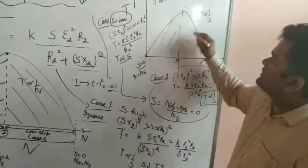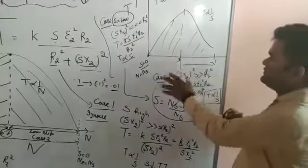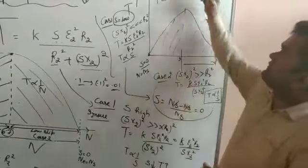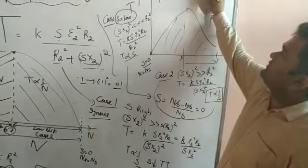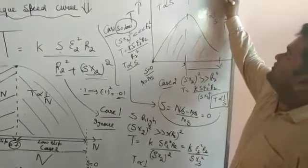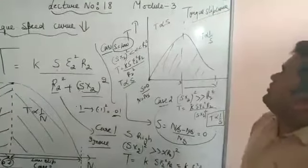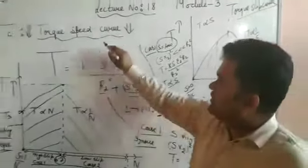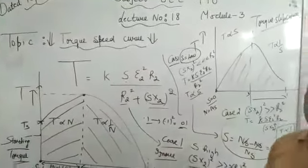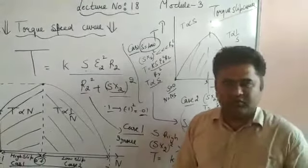So we have taught the two portions of the curve — one where torque is directly proportional to slip and one where torque is inversely proportional to slip. This is the torque-slip curve and the torque-speed curve. I hope you understand. Thank you so much.